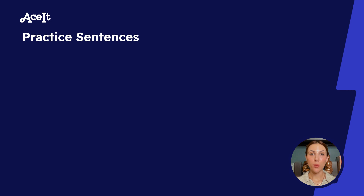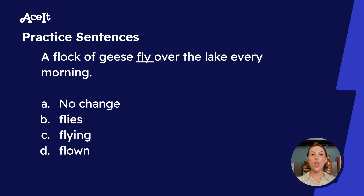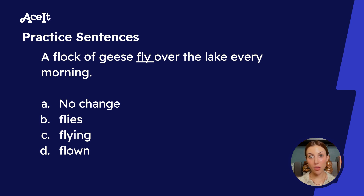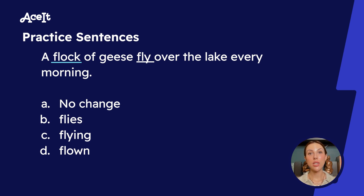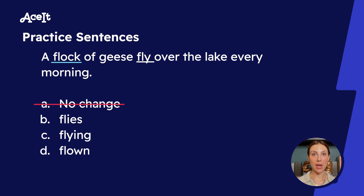Now let's do some practice with questions generated by ACET's AI. 'A flock of geese fly over the lake every morning.' What is our subject? You might be thinking it's 'geese,' which is plural, but you would be wrong. The subject is actually the word 'flock,' which is a collective noun representing all of the geese flying together. So we have a collective noun, which is always singular, meaning we have a singular subject. Let's go through and eliminate every plural answer choice. First, 'fly' — the answer already in the sentence — is not correct because 'fly' is plural.